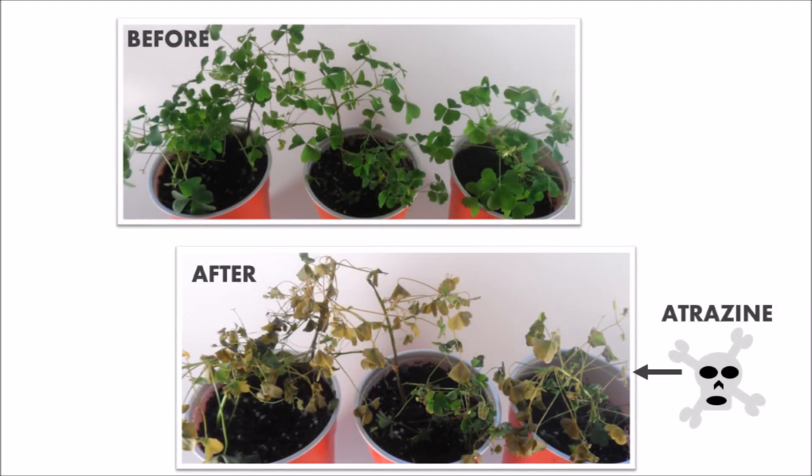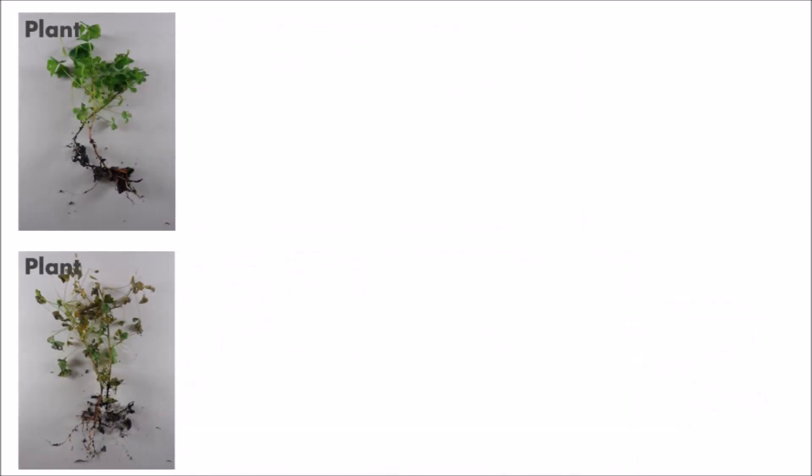So what is the atrazine doing to the plant? Why is the plant struggling to survive? Let's compare a healthy plant and a plant treated with atrazine. We pretty much see all the normal pieces and parts, so it must be doing something at a cellular or subcellular level, something we just can't see.